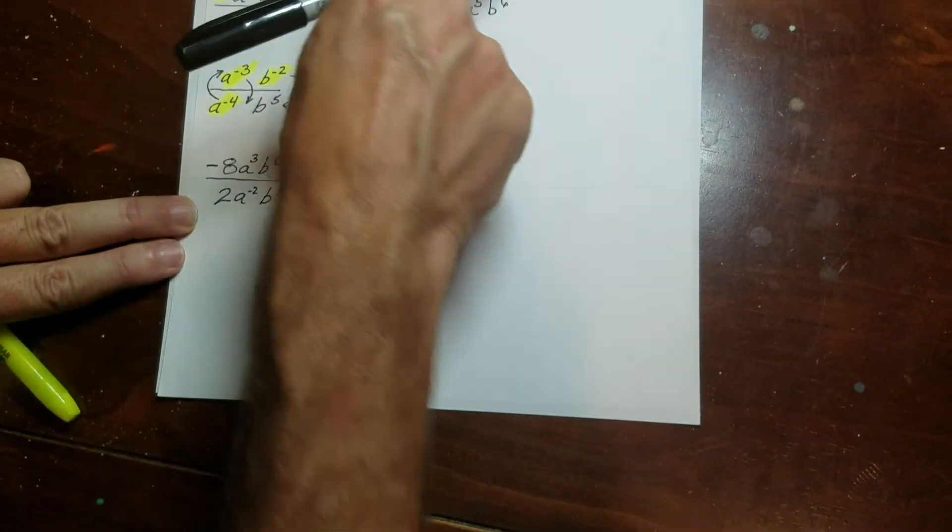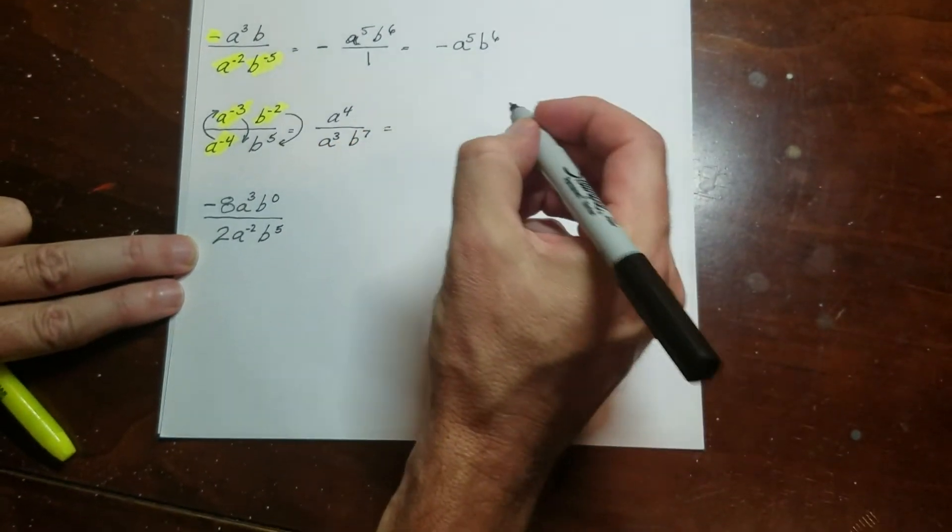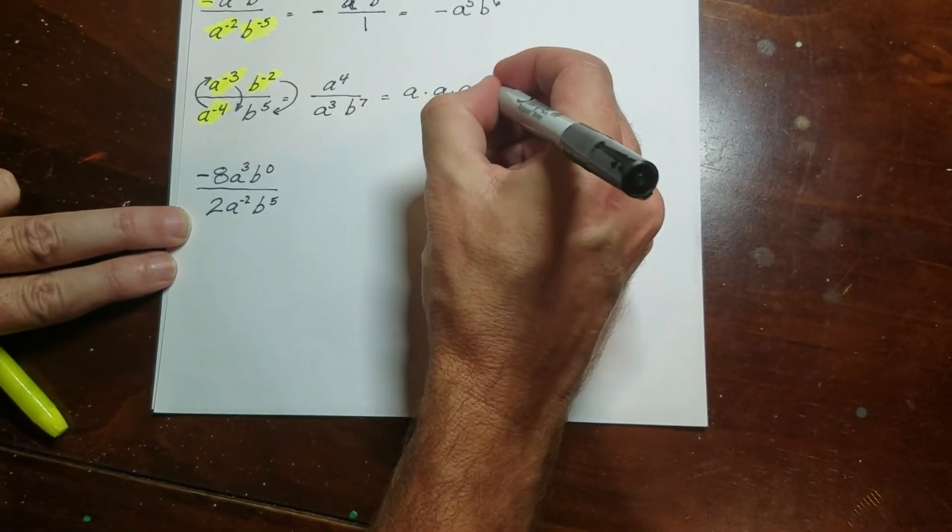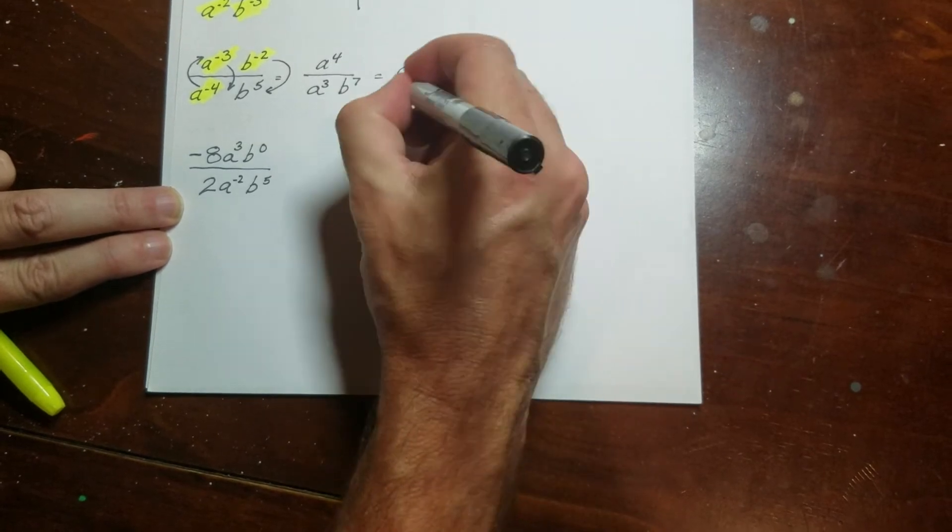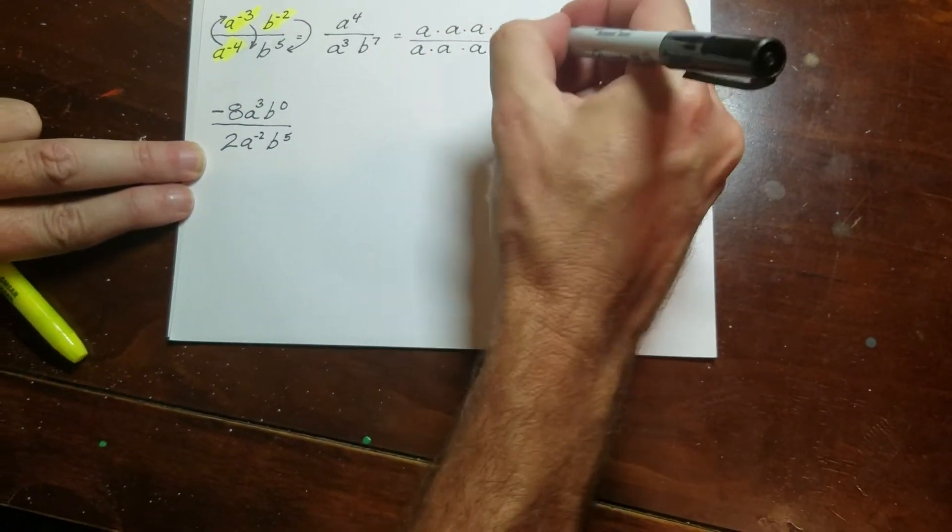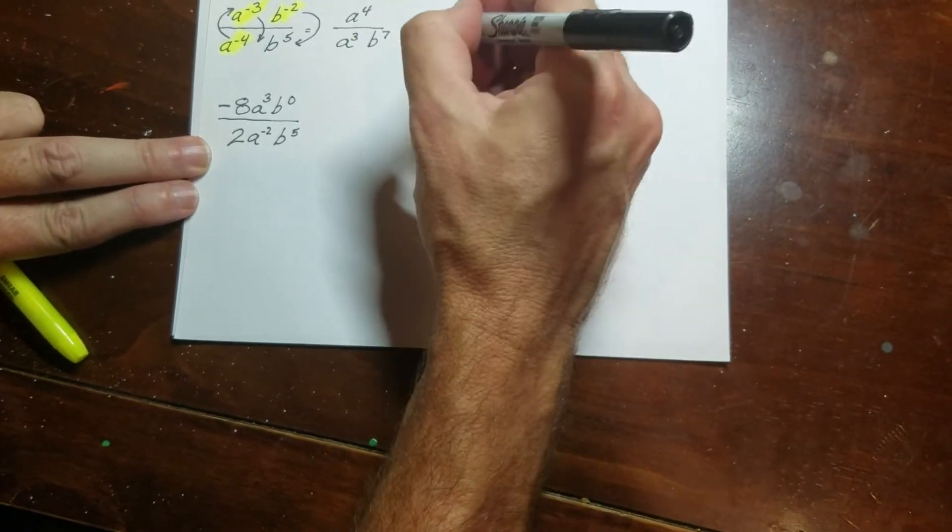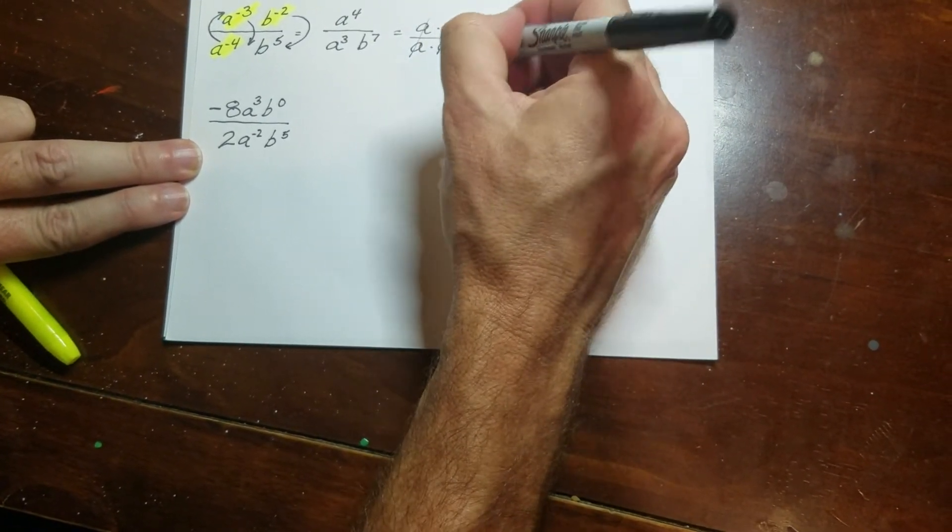You'll notice at the top here it says canceling method. So on the last video, I pointed out that if you expand this all the way, it actually looks like this. So you can always, well, I don't need to do b's because the b's, there's no other b's. But basically what happens is I'm canceling like this.